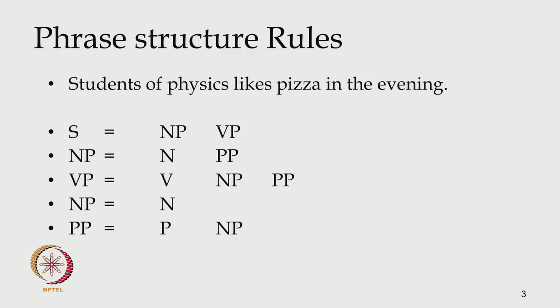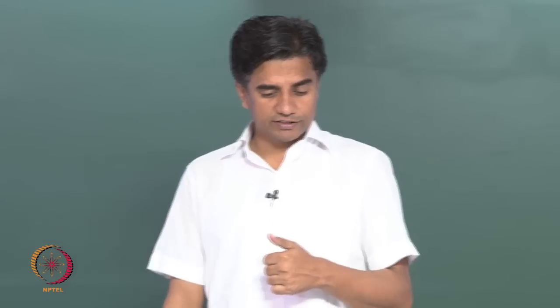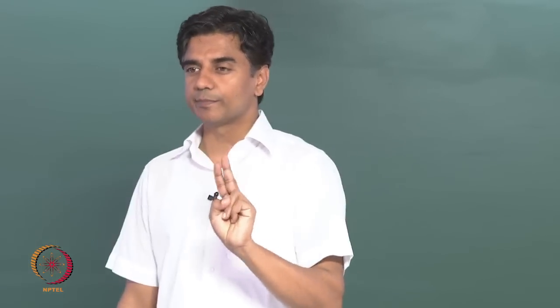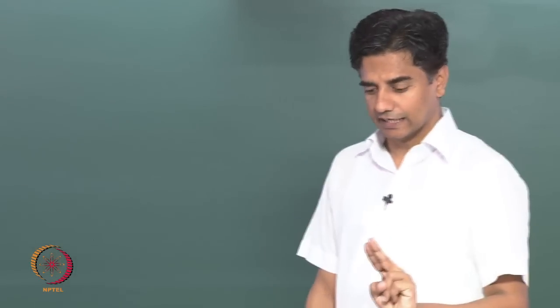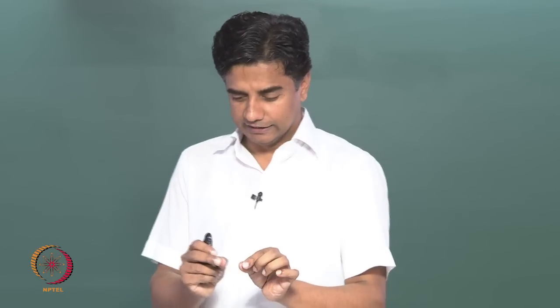In order to answer these questions, we have looked at this sentence and when we see this phrase structure, I have fixed your questions because now we can see things more clearly. There are just two simple points out of these rules that I want you to understand. The algorithm — or these names like NP, VP — are not so difficult for you to understand.